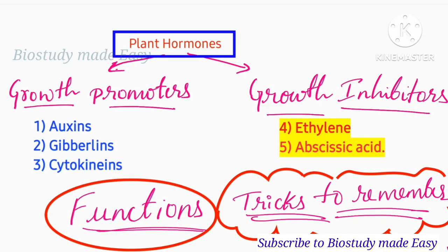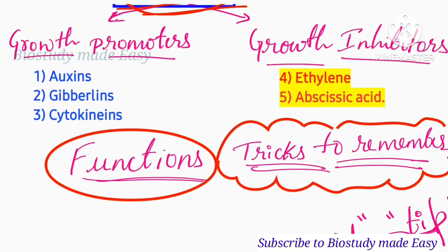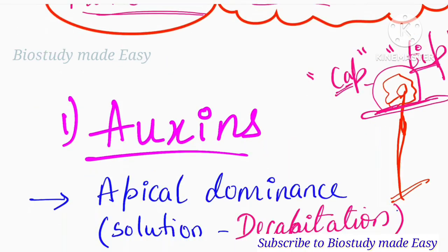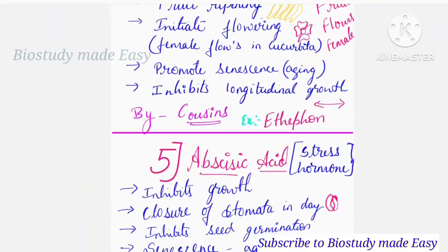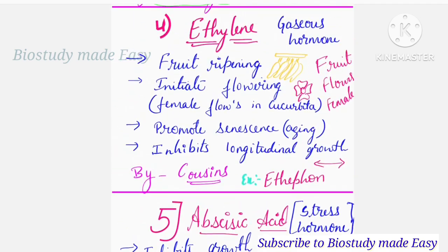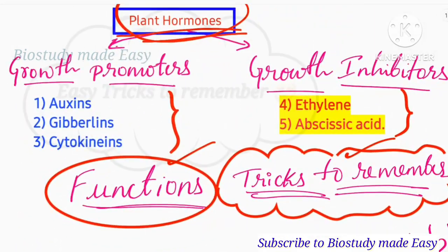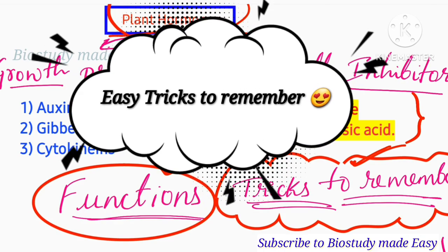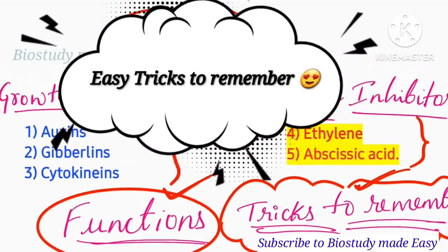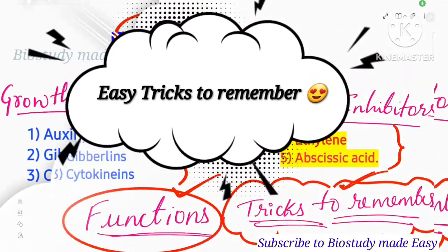Welcome to BioStudy Made Easy, my dear students. Now the topic is plant hormones. In this video, we will discuss types of plant hormones. So these are auxins, gibberellins, cytokinin, ethylene, and abscisic acid. These are 5 plant hormones. These are simple and easy tricks. Let's get started — plant hormones, looking at KCET and NEET.